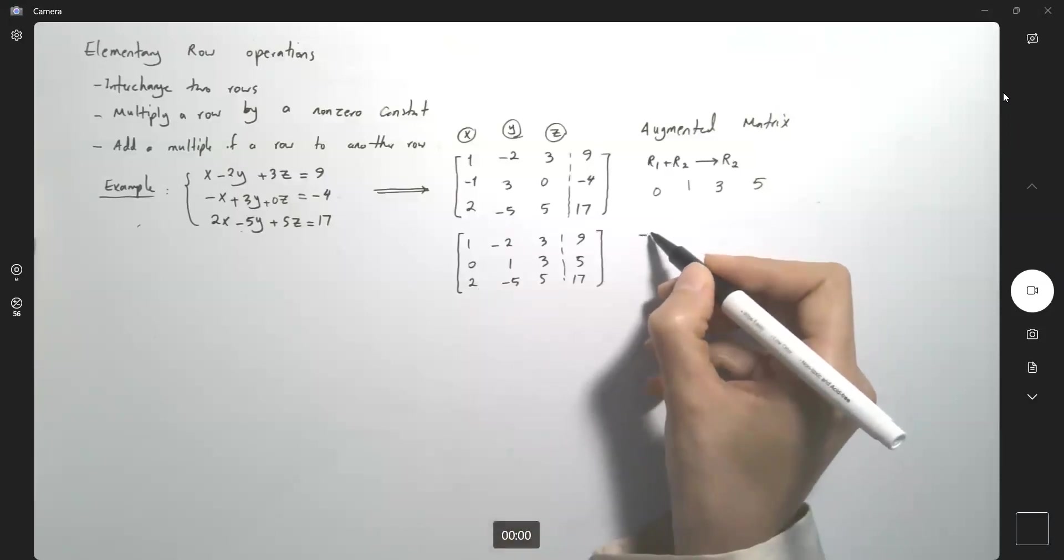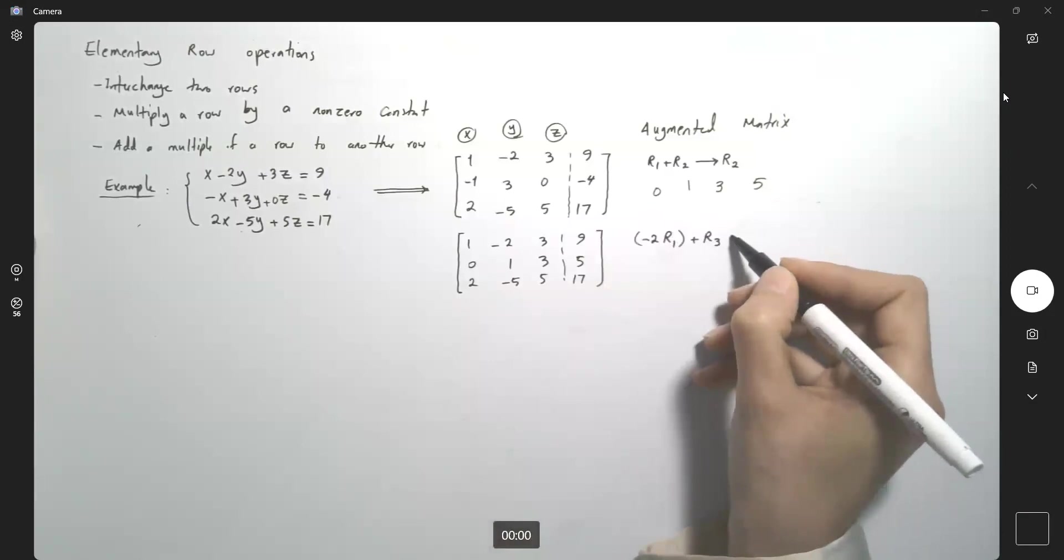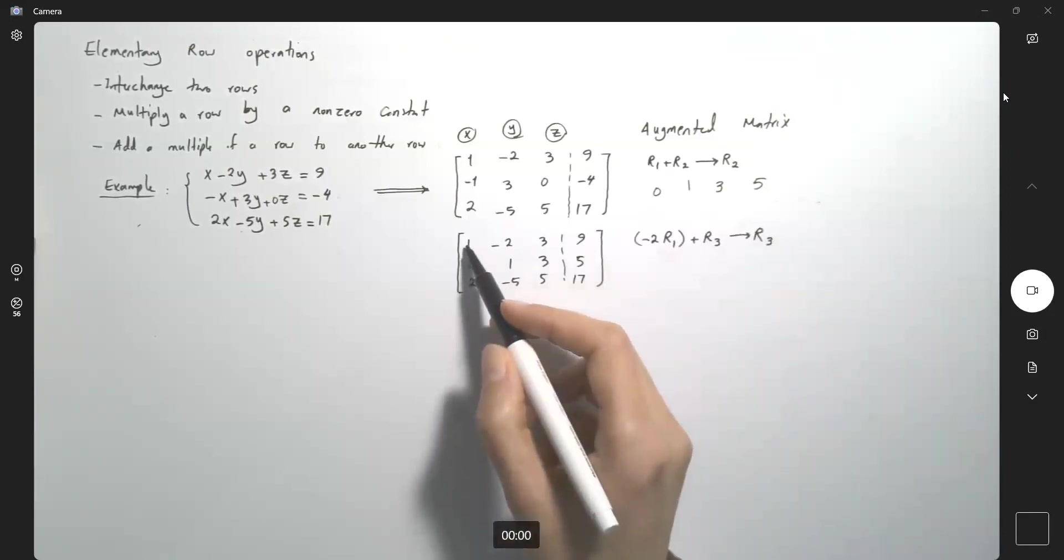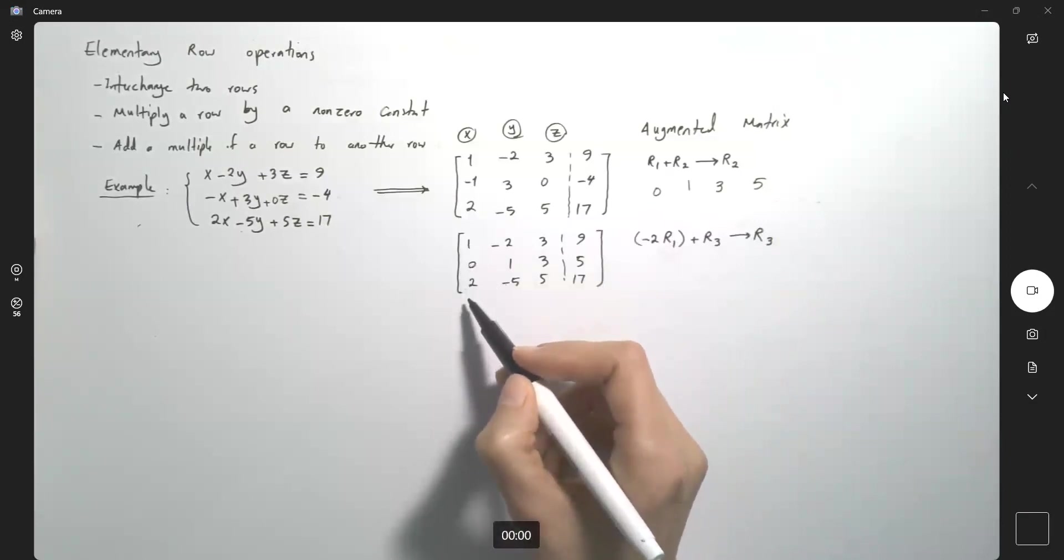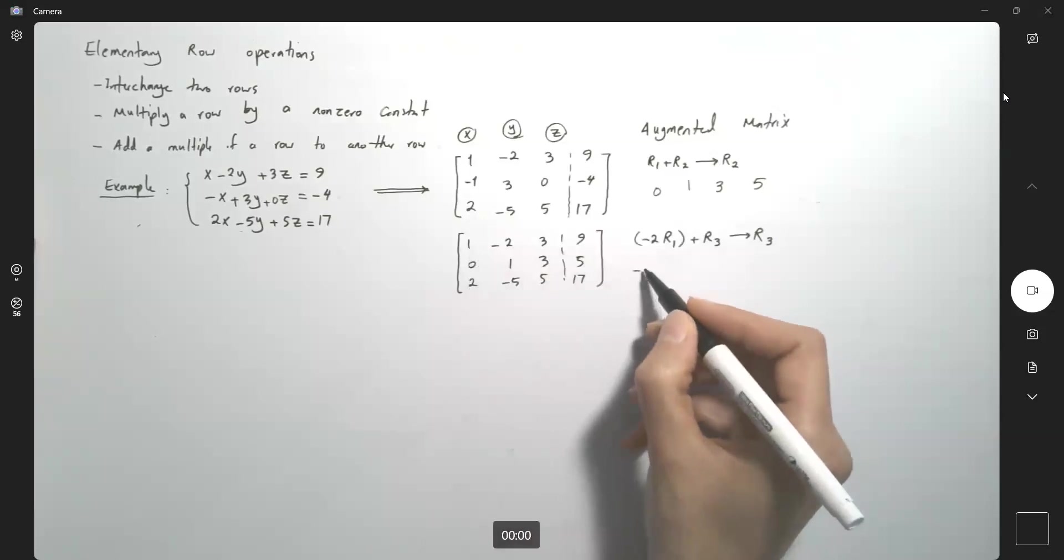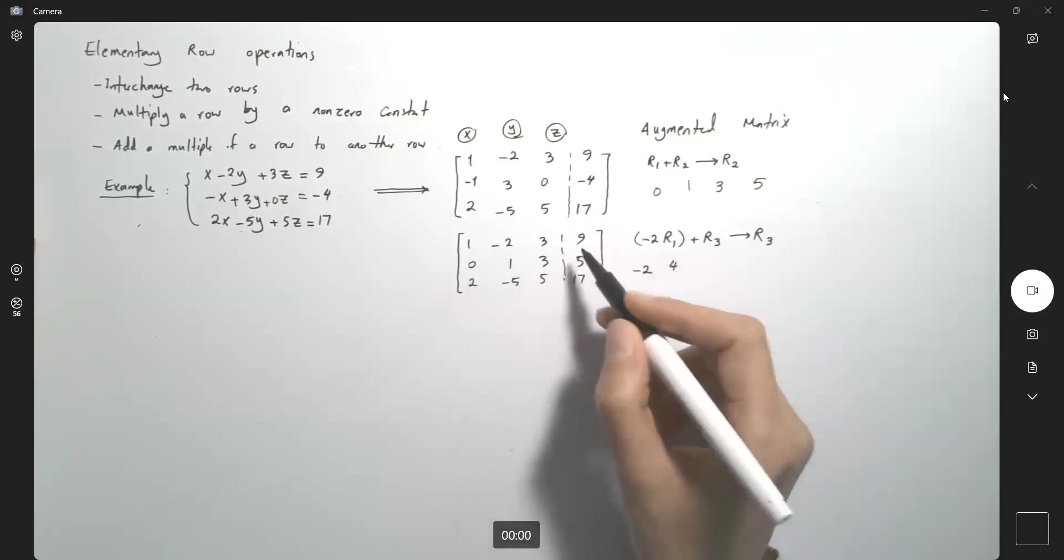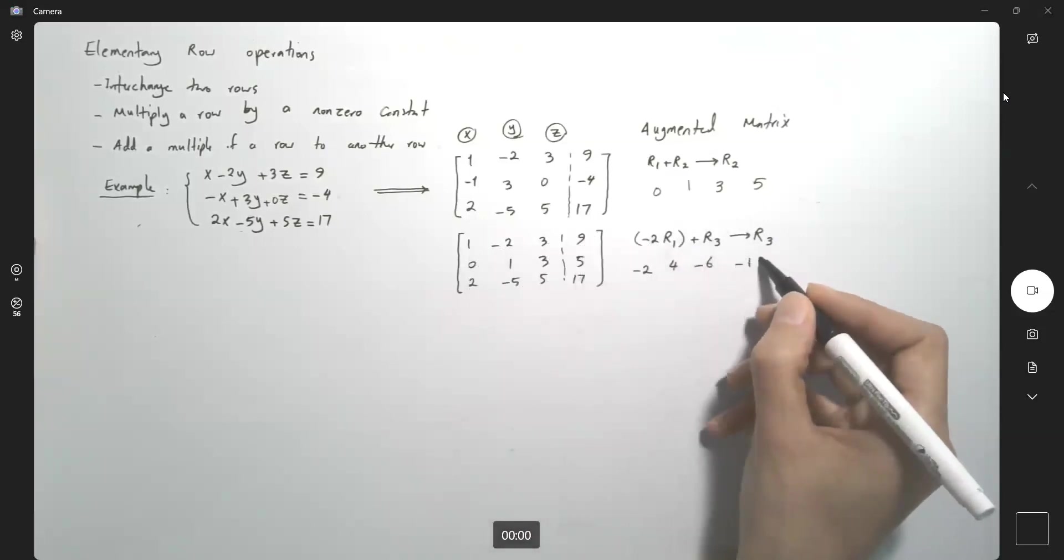So we're going to multiply the first row by negative 2 and add that to the last row. It's going to replace the last row. This row is going to create another 0 for you below 1. Negative 2 times 1, negative 2. Negative 2 times negative 2 gives you 4. Negative 2 times 3 gives you negative 6. And negative 2 times 9 gives you negative 18.